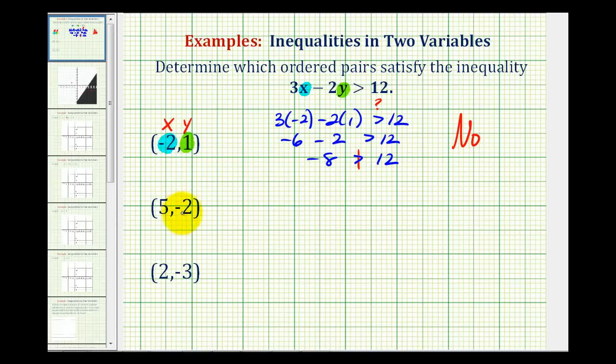Using the second ordered pair, we'll substitute 5 for x and negative 2 for y. So we're going to have 3 times 5 minus 2 times negative 2 greater than 12. Again, this is a question. Now we'll simplify: this will be 15, and then minus negative 4 becomes plus 4. So we have 19 is greater than 12. That's true. Therefore, this ordered pair does satisfy the inequality, so the answer is yes.